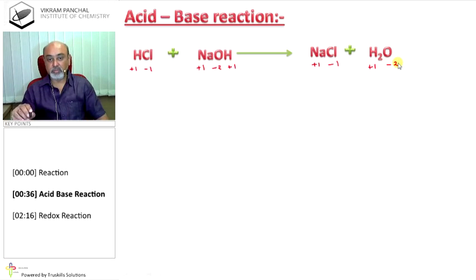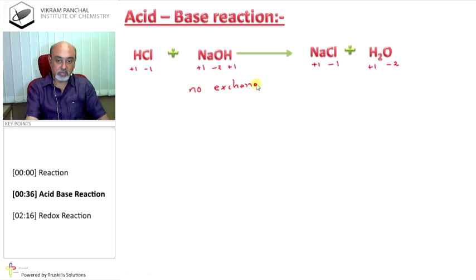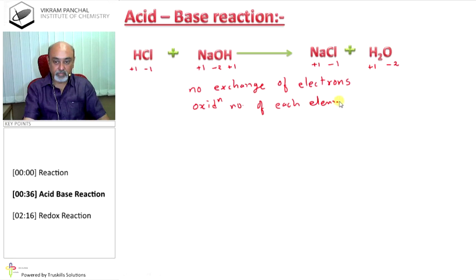If there is no change in oxidation number of any element, then it is acid-base reaction. Because in redox reaction, there is always change in oxidation number. So, normally in acid-base reaction, no exchange of electron takes place. And therefore, oxidation number of each element remains constant. This is the characteristic of acid-base reaction.